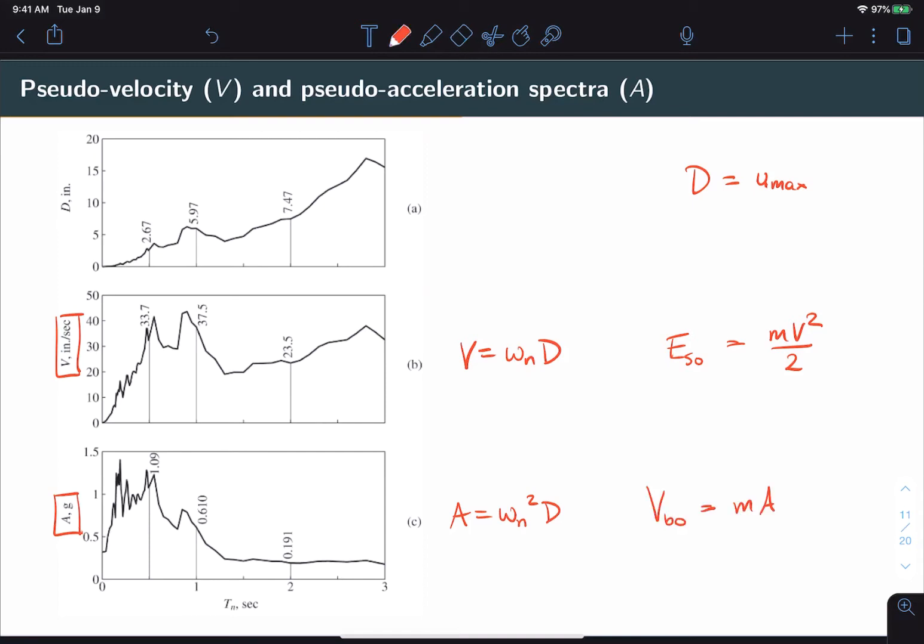Notice that we are overloading the V a little bit. V sub B corresponds to base shear, where V alone corresponds to pseudo-velocity. The knot subscript corresponds to a maximum value.